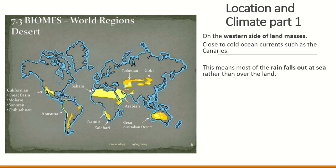So deserts are on the western side of land masses close to cold ocean currents, such as the Canaries current. These cold ocean currents bring cold air, and cold air cannot hold much moisture, so it will not bring rainfall. This means that any rain that does fall, falls out at sea rather than over the land. So these desert areas get no rainfall.